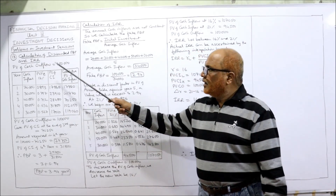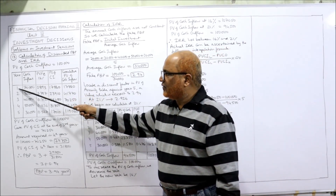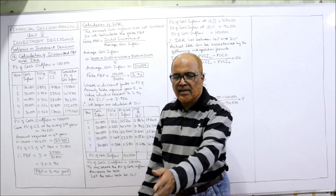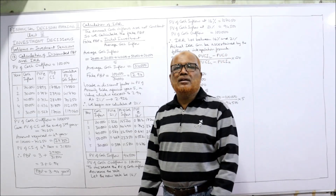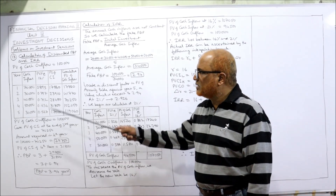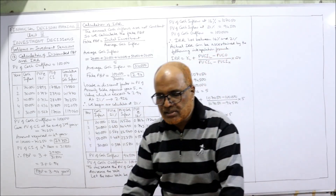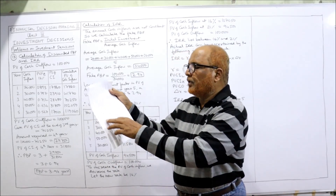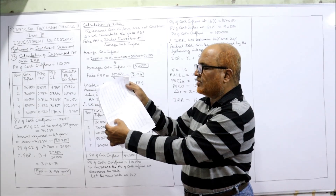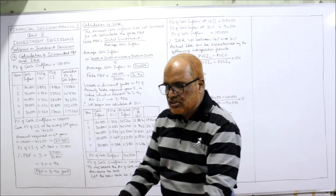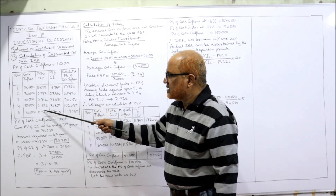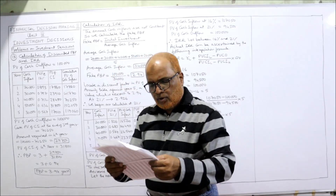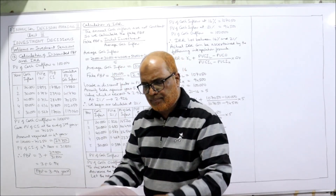For the calculation of discounted PBP, the PV of cash outflow is given as 1 lakh. Inflows from first to fifth year are: 20,000; 30,000; 40,000; 50,000; 30,000. PV factors should be taken at the discount rate of 12%. At 12%, referring the PV of rupee 1 table: 0.893, 0.797, 0.712, 0.636, 0.567.